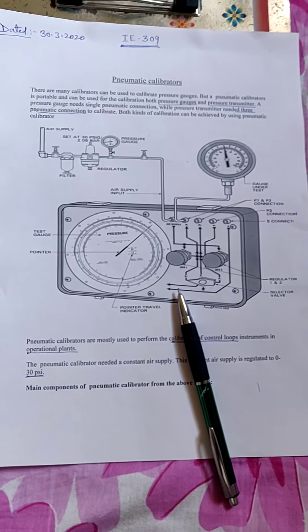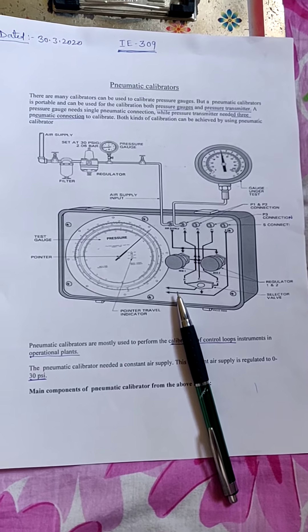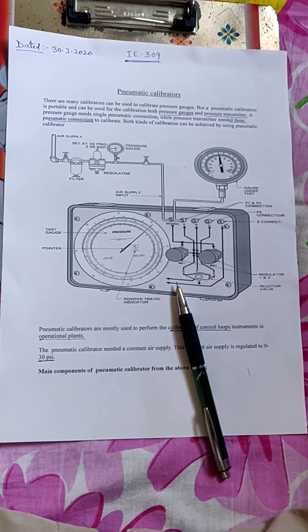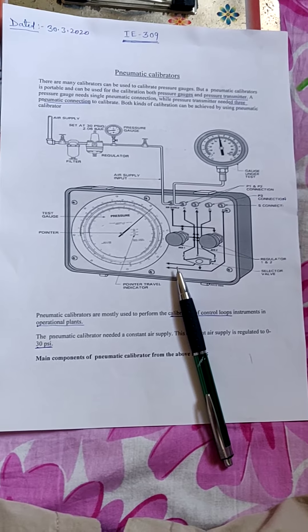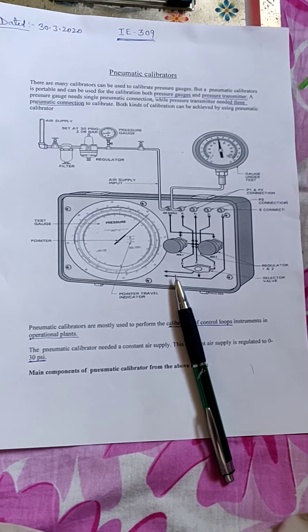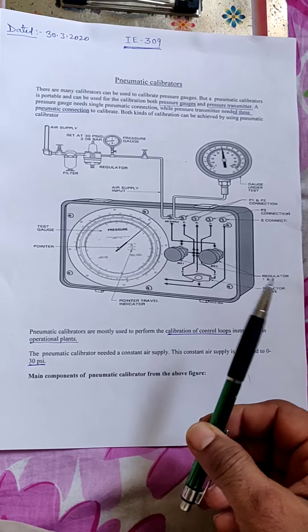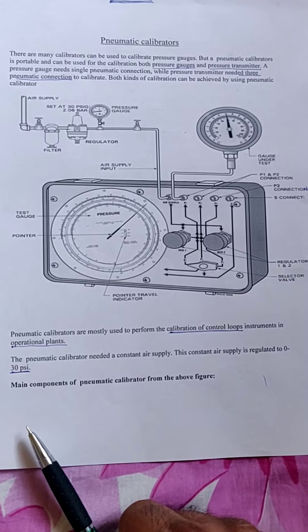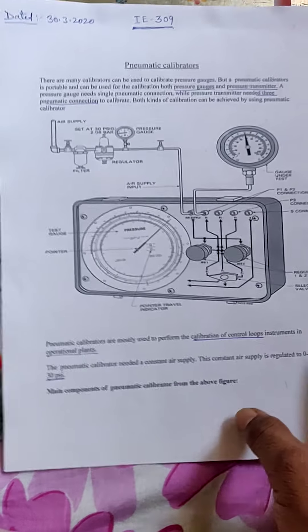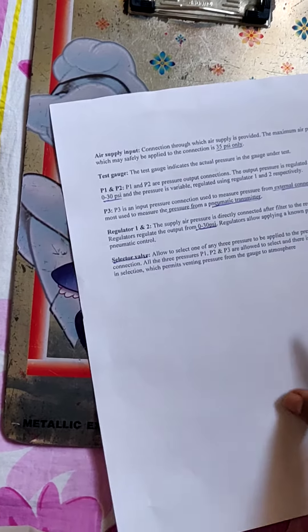In terms of percentage, first we check at zero rating, then 25% of the pressure gauge rating, then 50%, then 75%, and then 100% of the pressure rating. Then in the reverse process, we reduce it from 100% to 75%, then 50%, 25%, and then 0%. If there is some error, we make adjustments such as tightening of the spring and adjustment of the needle, so that the pressure gauge can be directly calibrated.